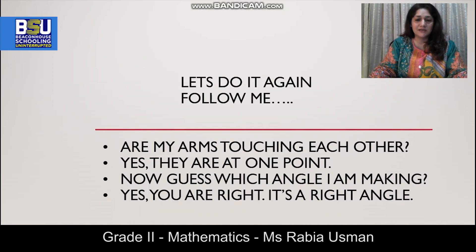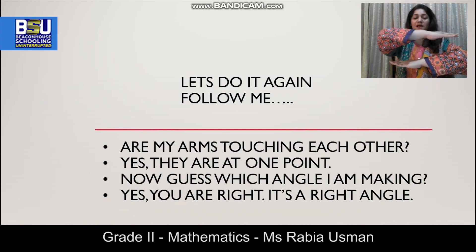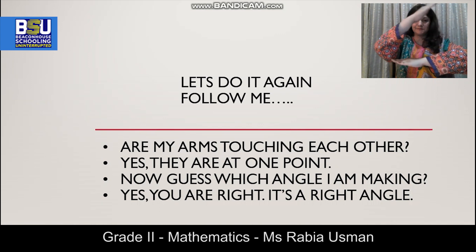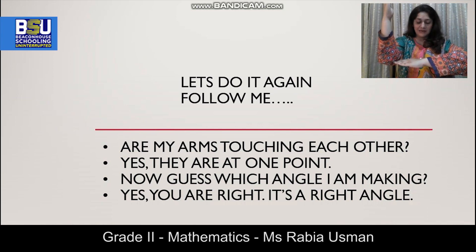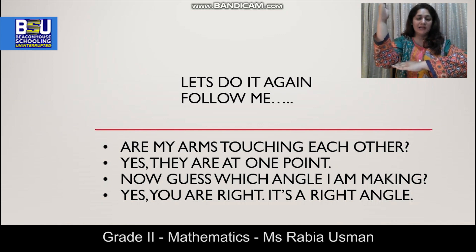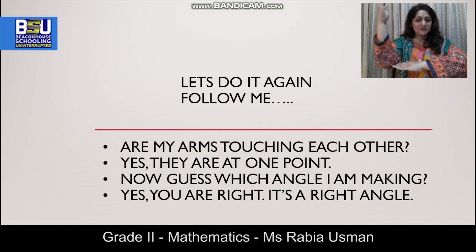Okay, let's do it again and follow me. Put your arms like this and imagine that your arms are lines. Now just observe what I am going to do. Now what's happening? You are imagining that my arms are lines. So now are my arms touching each other? Yes they are. And are they meeting at one point? Yes they are. Which angle are they making? They are making a right angle. Lines that meet at one point and make a right angle are called perpendicular lines.